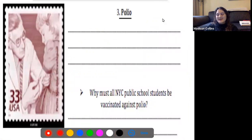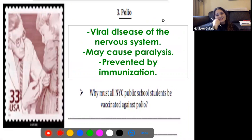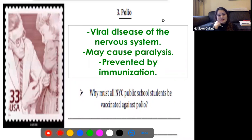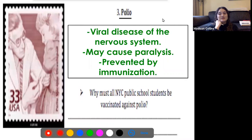The third disorder is polio — a viral disease of the nervous system caused specifically by polio virus. This may cause paralysis, but it can be prevented by an immunization or vaccine. All of you have hopefully had the polio vaccine, which means you can't get polio and you're not going to become paralyzed due to this virus.